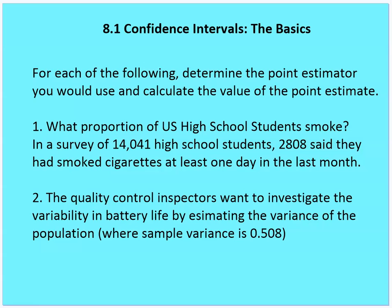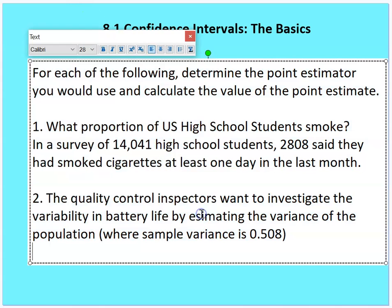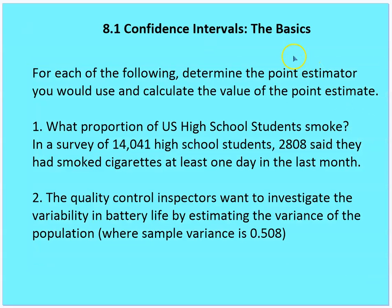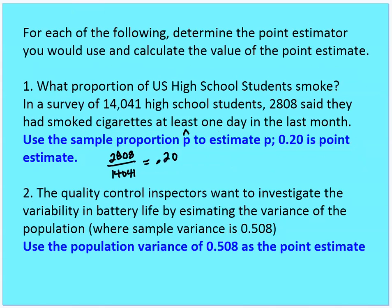Let's go through an example: for each situation, determine the point estimator and calculate the point estimate. First — what proportion of U.S. high school students smoke? In a survey of 14,000 high school students, 2,800 said they had smoked cigarettes at least one day in the last month. We use sample proportion as the estimator, and 0.20 as the estimate. Second — quality control inspectors want to estimate the variance of battery life; the sample variance is 0.508. We use population variance as the estimator, and 0.508 as the point estimate.